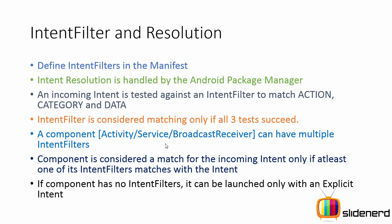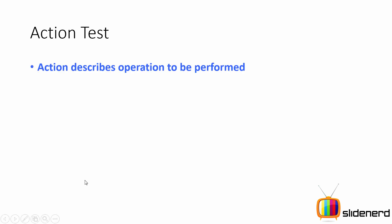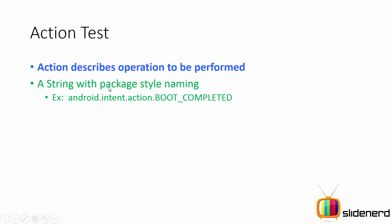Let's take a look at the action test first. Action describes the operation that you want to perform. For example, the standard action Android.intent.action.BOOT_COMPLETED indicates that your Android device has just completed restarting or booting. Action describes the operation to be performed or the operation that has already been performed. You use package-style naming convention when making your own actions.